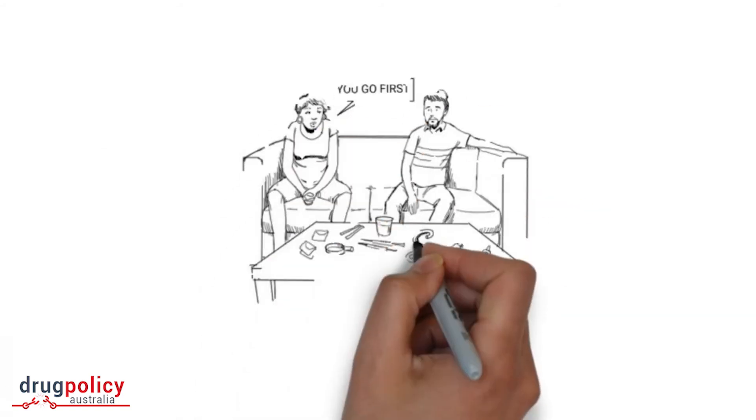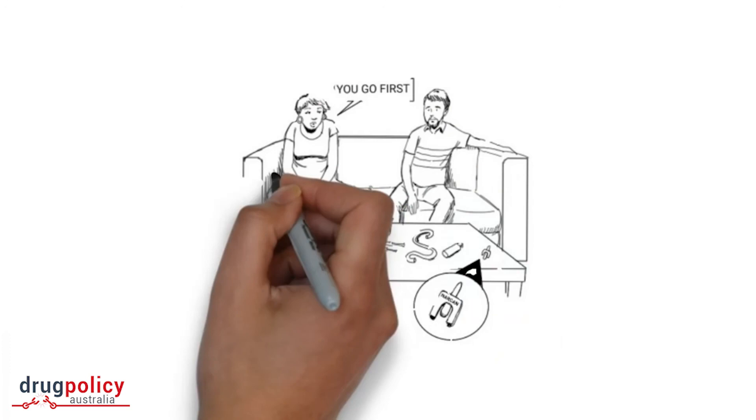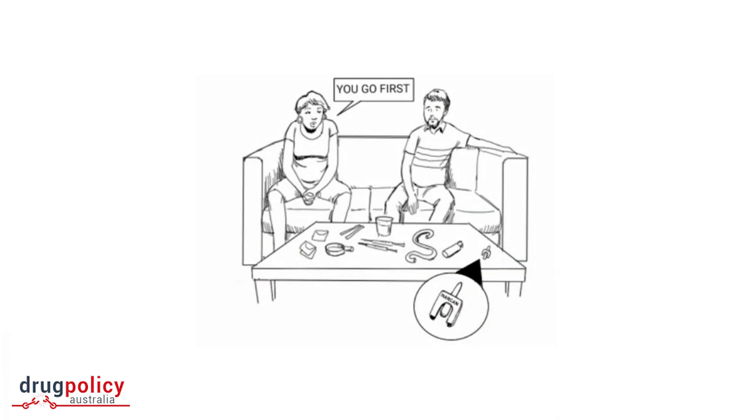First off, use the buddy system. Get high with a friend and take turns so that if one of you overdoses, the other can help.